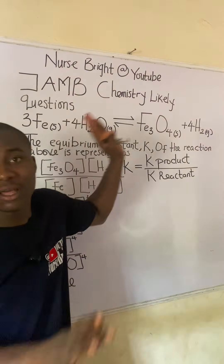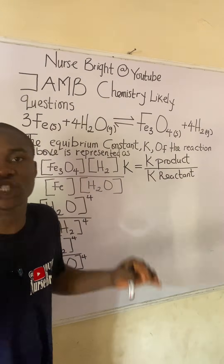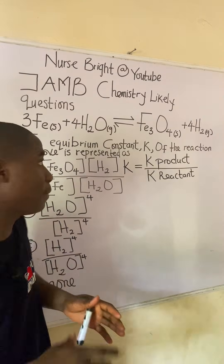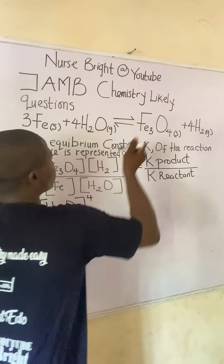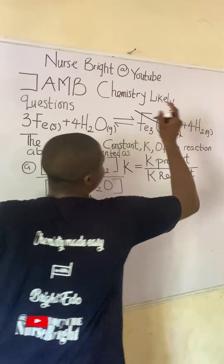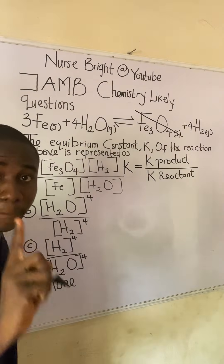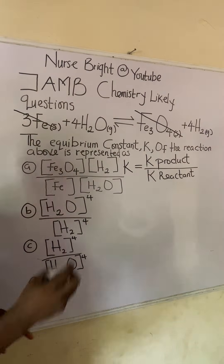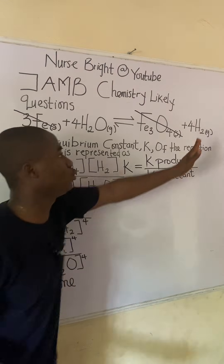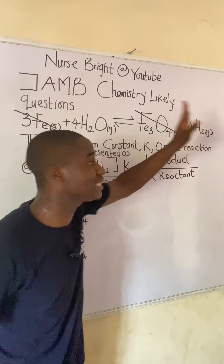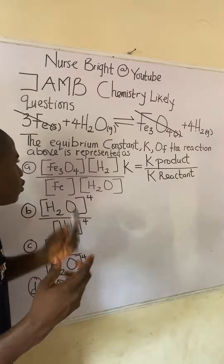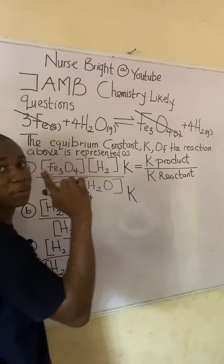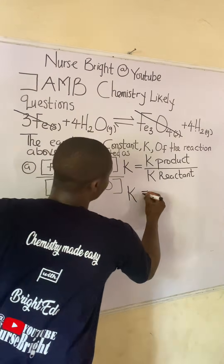On the product side I can see a solid species, so it is automatically cancelled — it does not appear in the expression. On the reactant side I can also see another solid species, so we cancel that out too. We are left with just this gas on the product side and this gas on the reactant side. The equilibrium constant expression K is equal to...